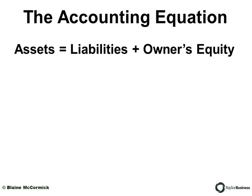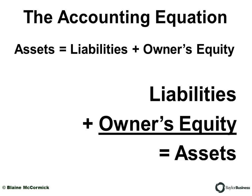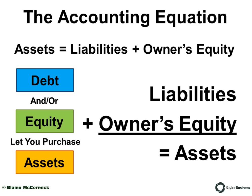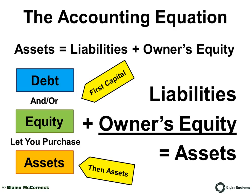I like to switch around the accounting equation because I think it puts the cart before the horse sometimes. I prefer to stack it this way: liabilities plus owner's equity equals your assets — because this tells a slightly different story. It says your debt and/or equity let you purchase assets. In the capitalist story, first you have to have capital, and then you can purchase assets.